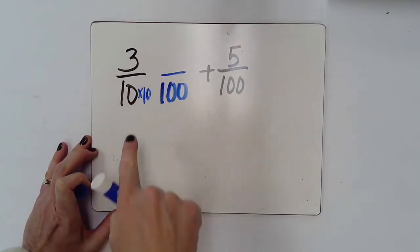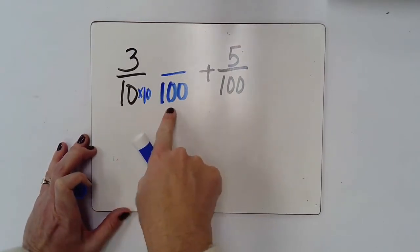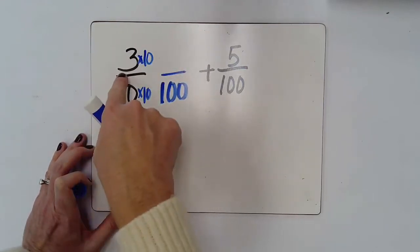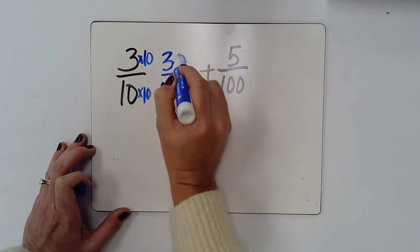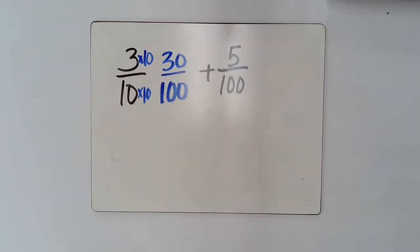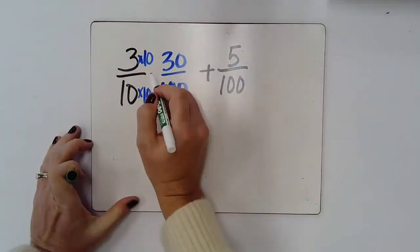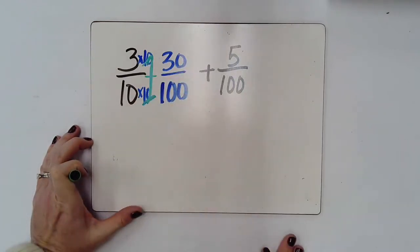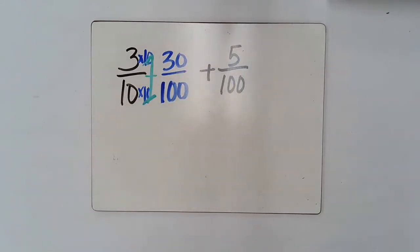So I'm going to be multiplying by ten. So ten times ten gives me a hundred. And whatever I do to that denominator, I'm going to do to the top. So three times ten gives me thirty. And again, the reason that this works is because ten over ten really does equal one. So it's essentially multiplying three tenths by one.